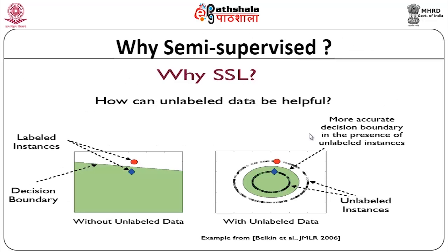Looking at this figure, taken from a journal, you have labeled instances and a decision boundary found without unlabeled data. When unlabeled instances are added, more accurate decision boundaries can be found. With unlabeled data, you are able to find the correct, accurate decision boundary. Please note that the use of unlabeled data in semi-supervised learning is not only because of the cost of providing labeled data, but also to improve supervised learning itself.